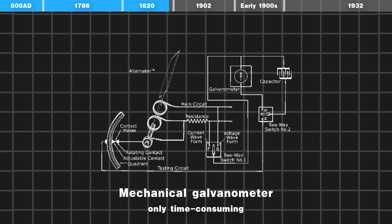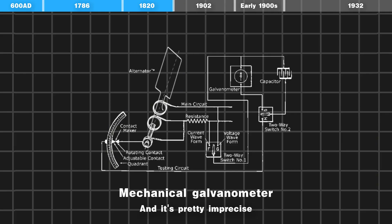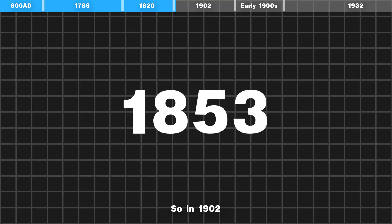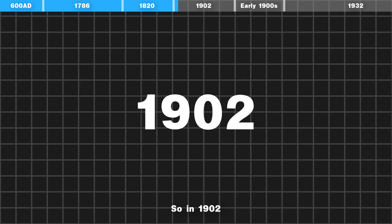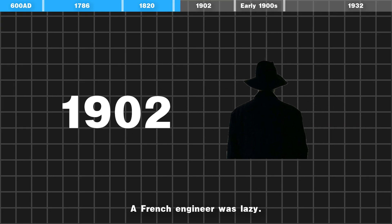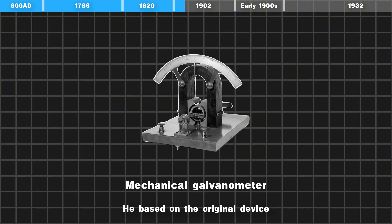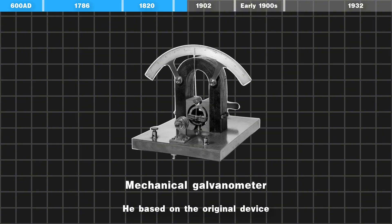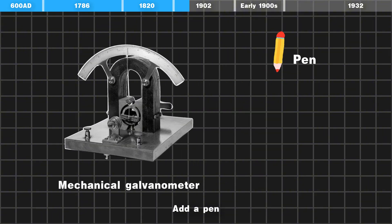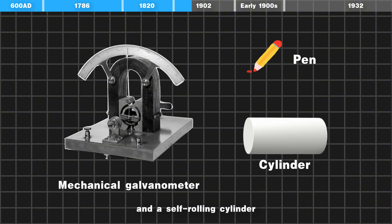This was not only time-consuming and tedious, but also pretty imprecise. So in 1902, a French engineer, based on the original device, added a pen and a self-rolling cylinder.